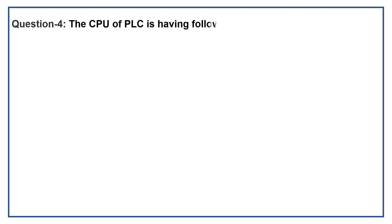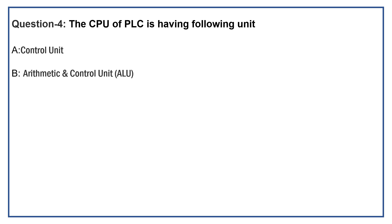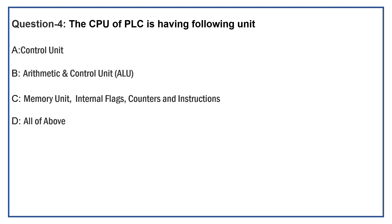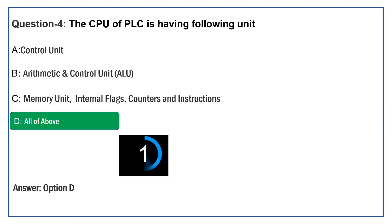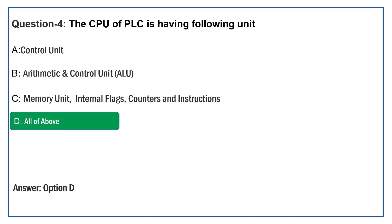The CPU of a PLC is having which following units? Option A: Control Unit. Option B: Arithmetic and Logic Unit. Option C: Memory Unit, Internal Flag, Counters and Instructions. Option D: All of the Above. The right answer is Option D: All of the Above. A CPU of PLC is having Control Unit, Arithmetic Control Unit, Memory Unit, Internal Flags, Counters and Instructions — all these units are part of a PLC CPU.